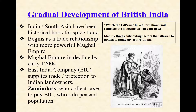But conveniently for the British, right as they were ascending in power, the Mughal Empire — as discussed before — was declining. By the early 1700s, this is the time of Aurangzeb, right after the construction of the Taj Mahal. The Mughals were going into their decline, which is convenient if you're trying to grow your presence, grow your trade, grow your wealth, and build an empire.